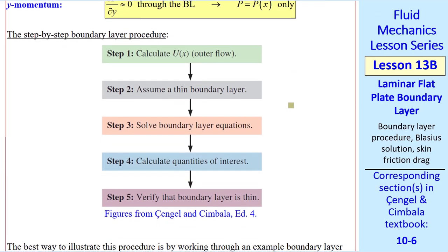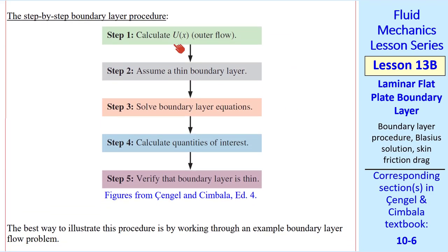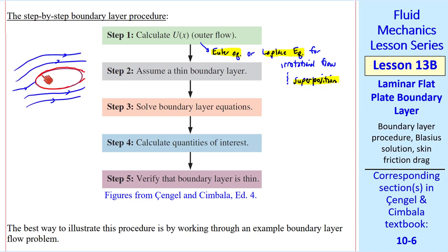Here's the step-by-step boundary layer procedure. First, we calculate capital U of X, the irrotational outer flow. To do this, we use either the Euler equation or the Laplace equation for irrotational flow. We can also use superposition to generate more complex flows, as we've discussed in previous lessons. Step 2 is to assume a thin boundary layer. We don't really do anything mathematical in this step. We just assume that this boundary layer is so thin that it does not affect the irrotational outer flow that we calculated in step 1.